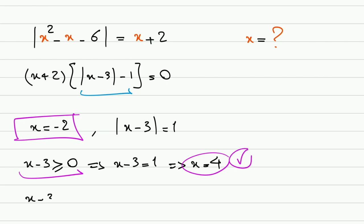And now the second case: x minus 3 is less than 0. It's negative. That means the absolute value function returns the negative form of it. Negative x plus 3 is equal to 1, and then x is 3 minus 1, and that's 2. Again, does it satisfy this condition? 2 minus 3 is negative 1. It's less than 0, so we can accept this one as well.